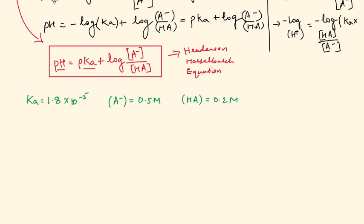So let's solve this equation right away. So putting it this way, we have to find pH. And that will be equal to negative log of Ka is 1.8 times 10 to the power minus 5, plus log of 0.5 divided by 0.2.